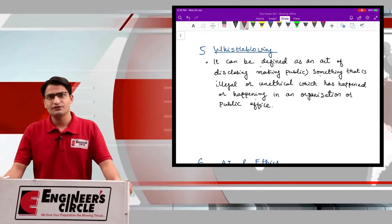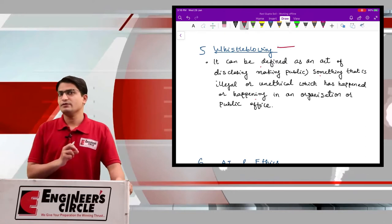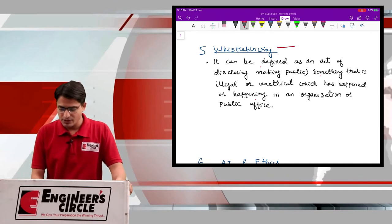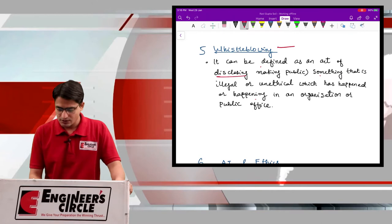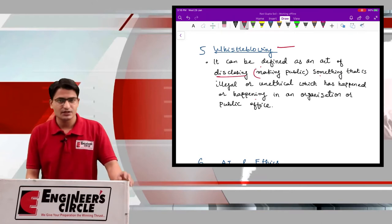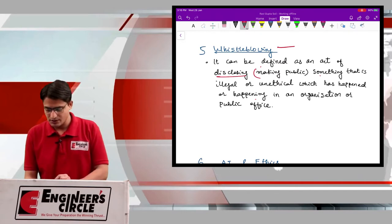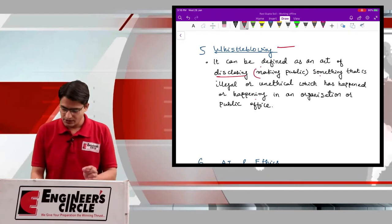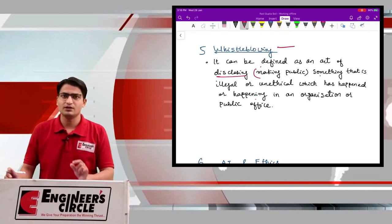The next ethical issue that we are taking is whistleblowing. So what is meant by whistleblowing? Whistleblowing can be defined as an act of disclosing or making public something that is illegal or unethical which has happened or is happening in an organization or public office.